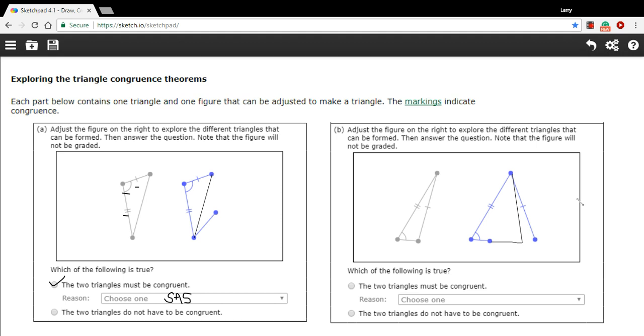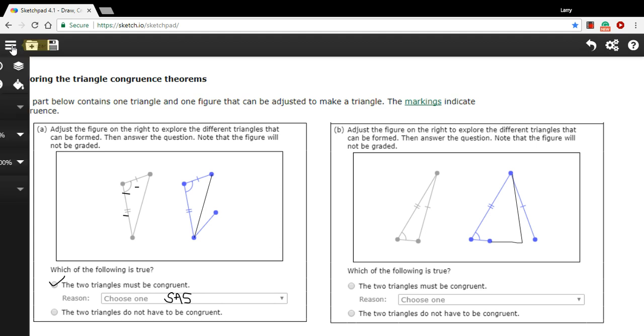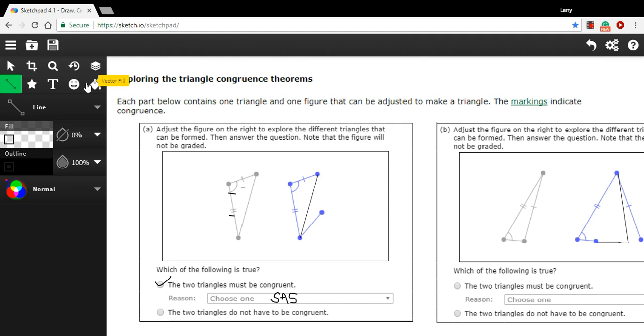What that's telling us is that if you have two sides and an angle, but the angle's not in between them, then that doesn't work. It's not going to make the triangles necessarily congruent.